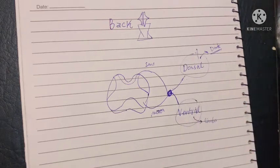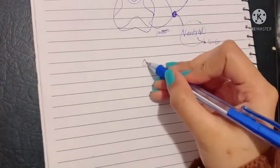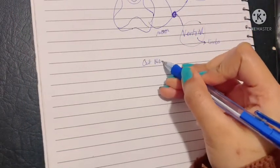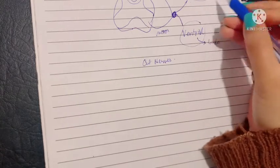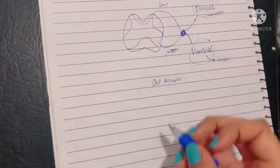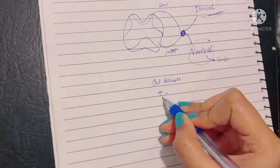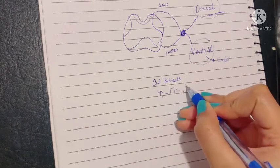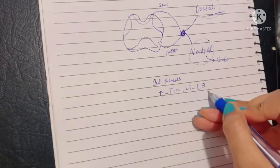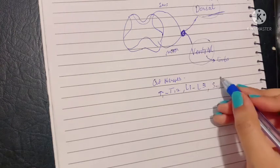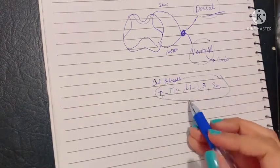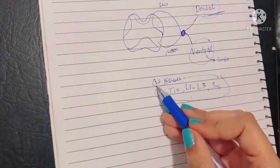Now since we're talking about the back, the cutaneous innervation of the back is derived from the posterior primary rami. The posterior primary rami of the nerves T1 to T12, L1 to L3, and the five sacral nerves all give supply to the skin of the back.